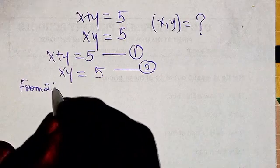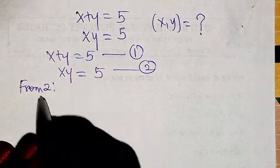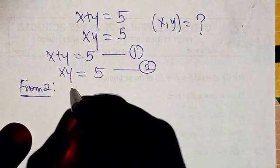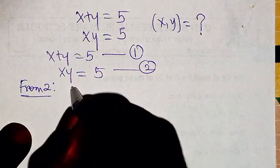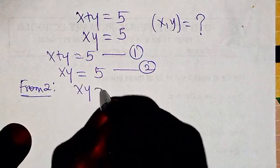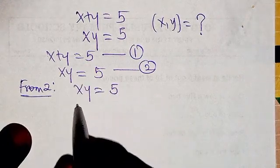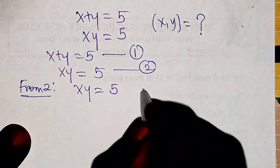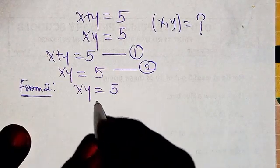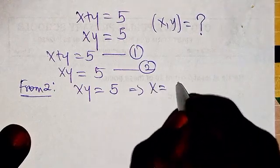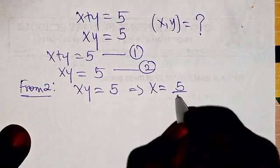We will start from equation two by making one of the variables the subject. Let me make x the subject of the formula. So from x times y equals 5, making x the subject gives us x equals 5 over y.